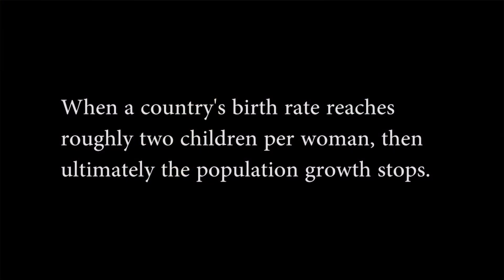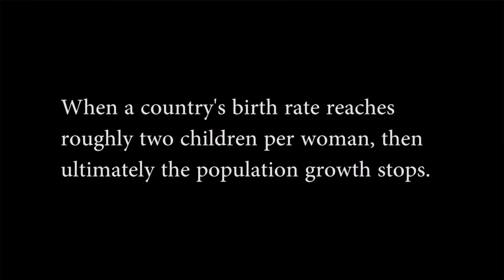We all know that when a country's birth rate reaches roughly two children per woman, population growth ultimately stops. And that 'ultimately' is the key to momentum. Normally, in a high life expectancy country like the U.S. or France, around 2.1 children are required to reach replacement level — when a couple just replaces themselves, two for two, not increasing the size of each succeeding generation.